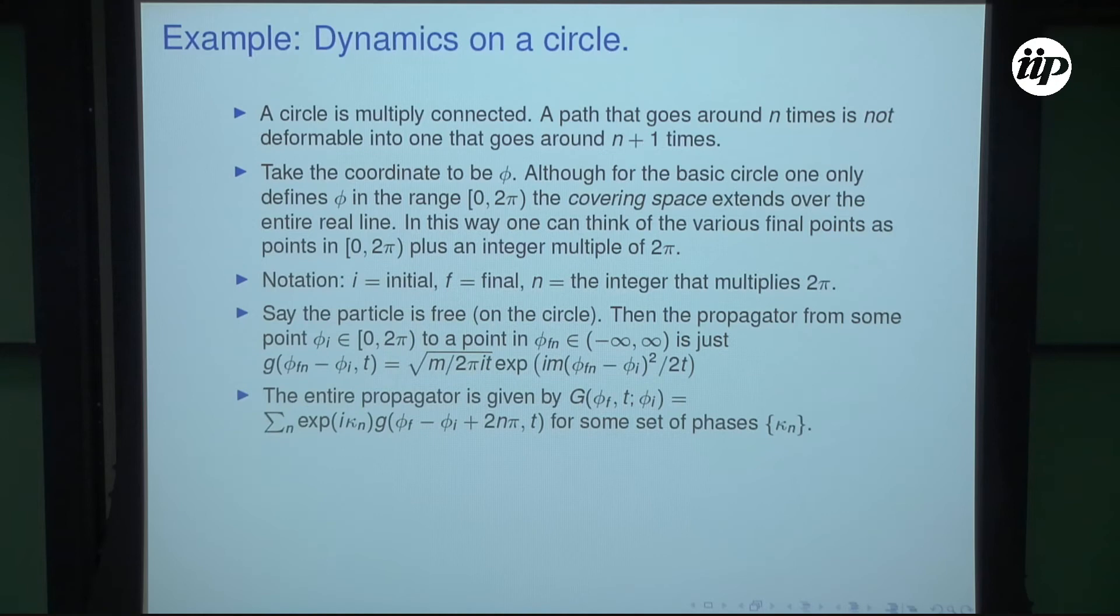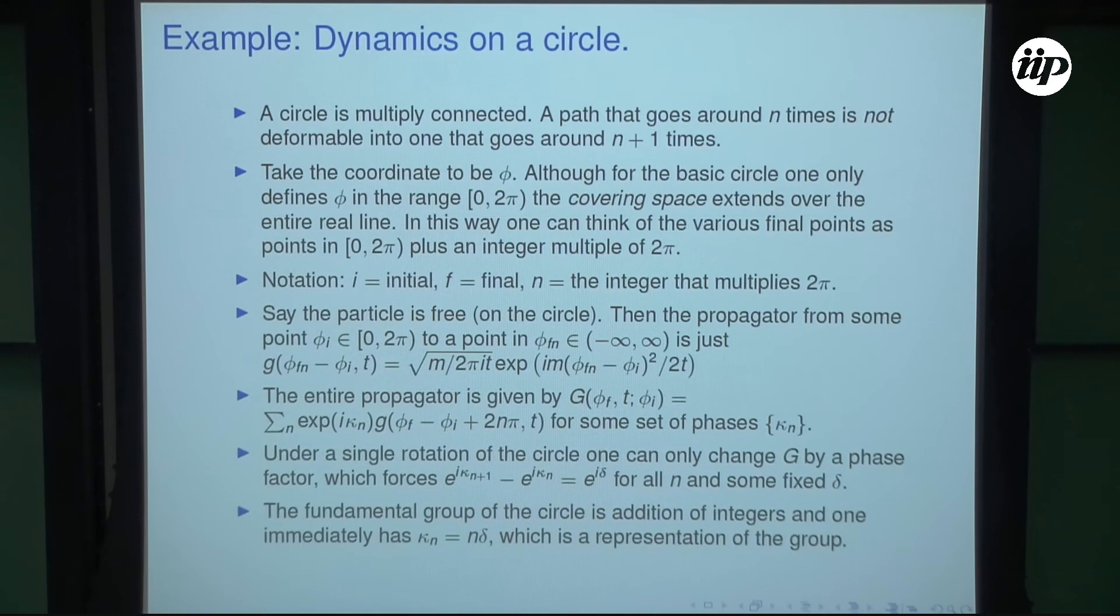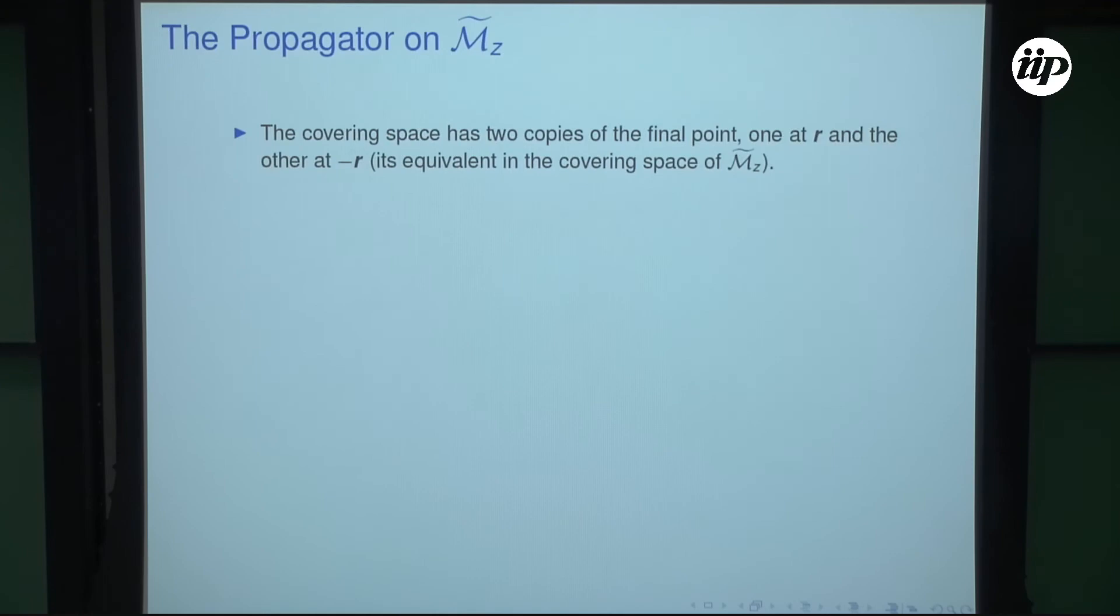Let me give an example. This is an old example. This would be a circle. A circle is multiply connected because if you go around twice, you go three times, you can't deform them into each other. They're simply different. The covering space has many points, which is phi plus any integer multiple of two pi. Those are the various points in the covering space. The propagator becomes the propagator of a single class of states, since it's a free particle, just becomes this thing. And finally, you have to add them up with some phases. When you do that, you find that e to the i k n plus 1 minus e to the i k n must be equal to some delta. The fundamental group is the addition of integers, and one immediately has that the propagator, the phase for n, k sub n, is just equal to n times delta, which is the representation of the group.